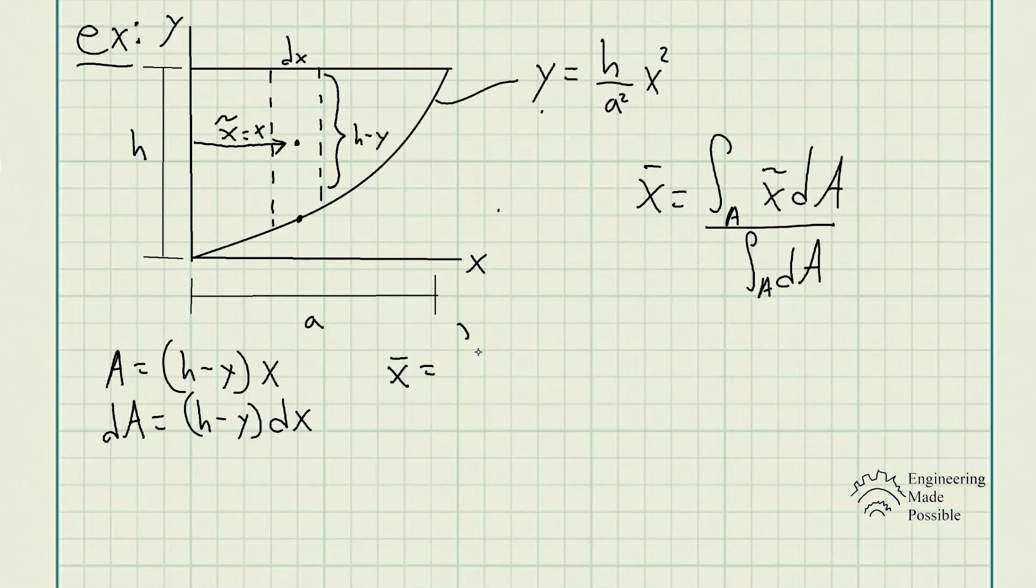So the integral of x times dA, which is h take away y dx. But keep in mind, we also have the y function here with respect to x, so we just plug it in for y here. Let's go ahead and finish writing this up.